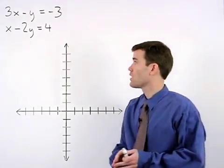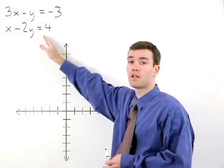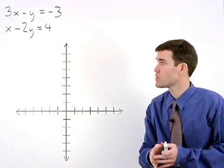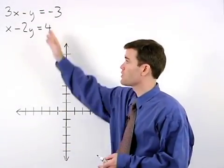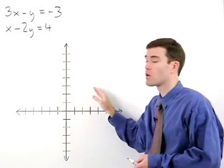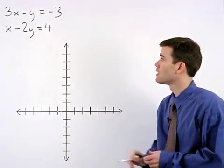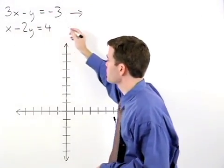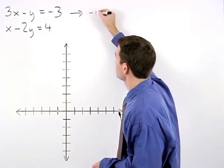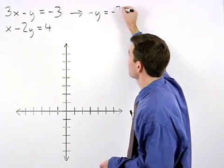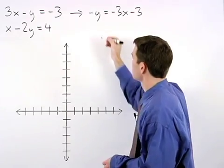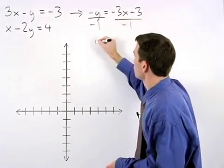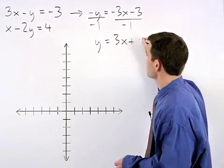First of all, notice that our two lines are not written in y equals mx plus b form. So our first task is to convert these equations to the proper form before graphing. For our first equation we would subtract 3x from both sides to get negative y equals negative 3x minus 3. Divide both sides by negative 1 and y equals 3x plus 3.